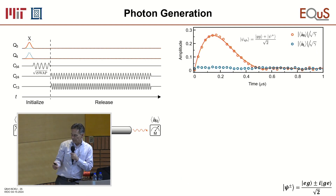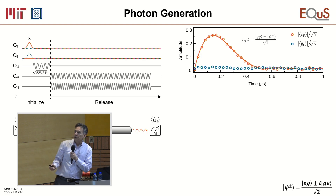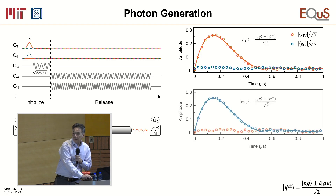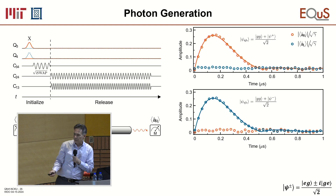This is what it looks like when we set the phase such that the photon only goes to the right — we get this wave packet out the right and basically nothing on the left side. Similarly, when we set it to go left, we see the photon out the left side with this wave packet but nothing on the right.